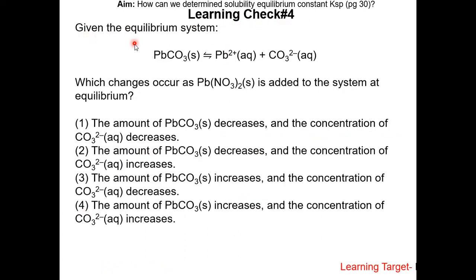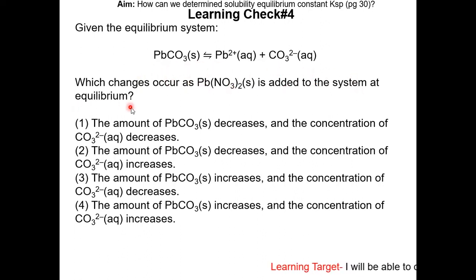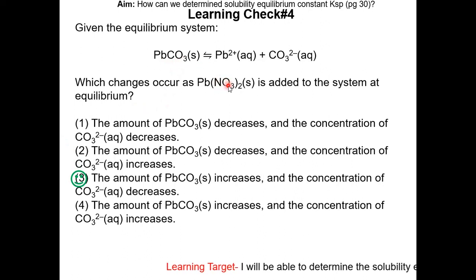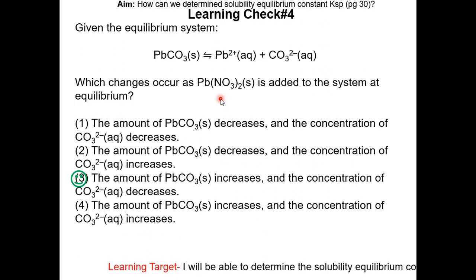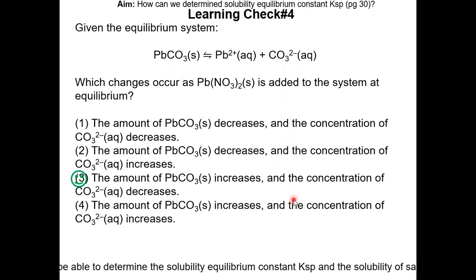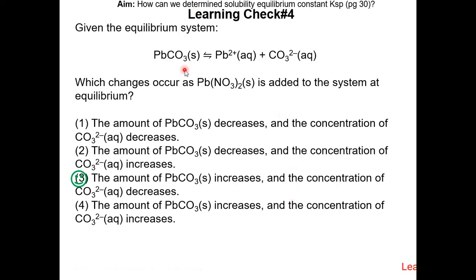Learning check number four: given the equilibrium system, which changes occur as lead(II) nitrate is added to the system at equilibrium? The answer is choice three. The common ion between lead(II) carbonate and lead(II) nitrate is the lead ion. Since you're adding lead ions into the solution, it will shift the equilibrium to the left, so lead(II) carbonate will increase and the concentration of carbonate ions will decrease because it is being used to make lead(II) carbonate.